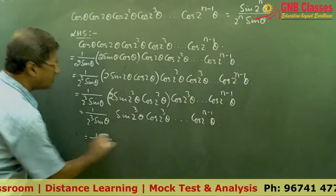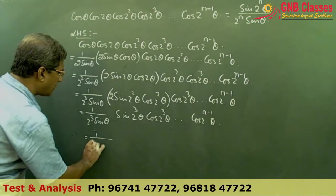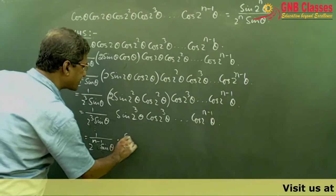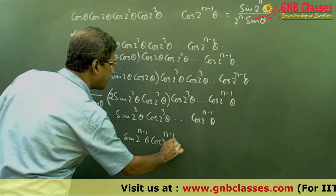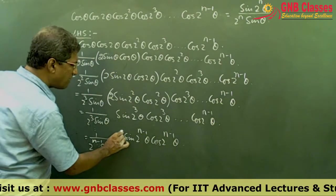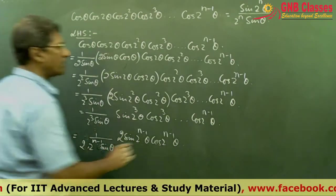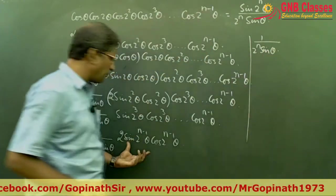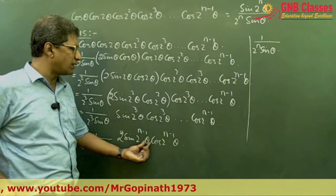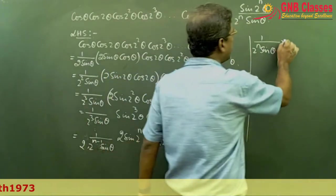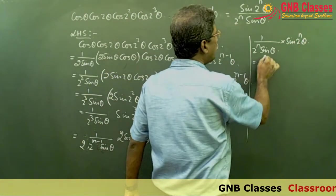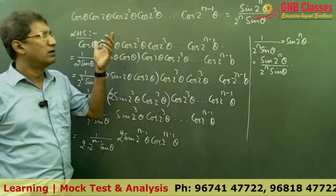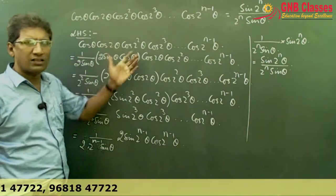From here we can write: if we proceed this way, the last term will involve cos 2^(n-1)θ. Multiplying with 2 and dividing by 2, in the denominator we get 2^n sin θ. Then 2 sin 2^(n-1)θ · cos 2^(n-1)θ = sin 2^n θ. Therefore the right-hand side is sin(2^n θ) / (2^n sin θ) — a very important result. Is it clear?